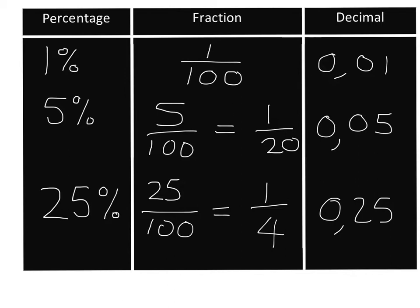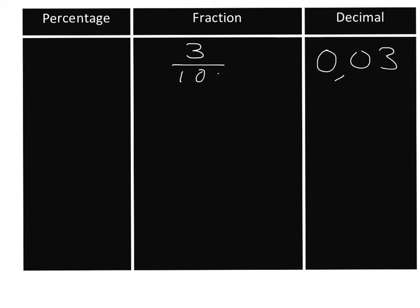It's very easy to move between percentage, fraction, and decimal. Let's go in the other direction now. If we want to turn a decimal into a percentage, it's just as easy, especially if we go through fractions. If we take 0.03 and want to find out what it is as a percentage, our first step is to turn it into a fraction. We know 0.03 is three over a hundred, and the minute we have it as a fraction over a hundred, we can immediately say it is 3 percent.